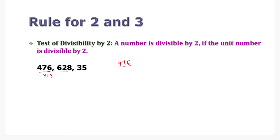What about 628? Yes, 8 is an even number so 628 can be divided by 2 also. But what about 35? Well, 5 is an odd number, so 35 cannot be divided by 2.